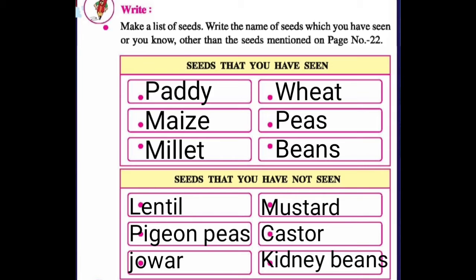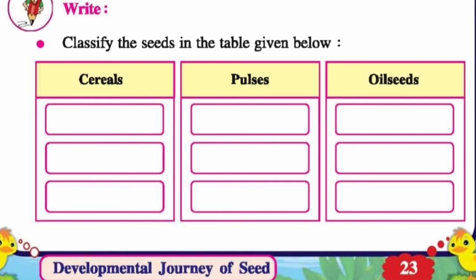Now next is: classify the seeds in the table given below. Here we have to classify the seeds into three groups — cereals, pulses, and oil seeds. Three different groups are given here, but there are no names filled in yet, so you have to write them yourself.